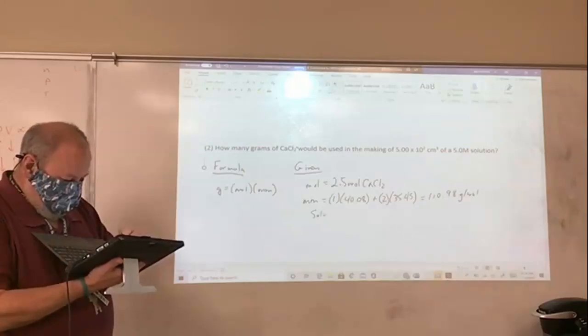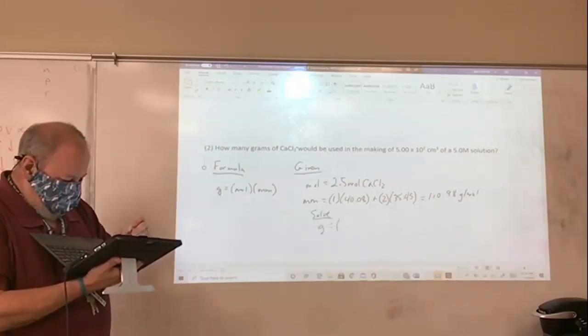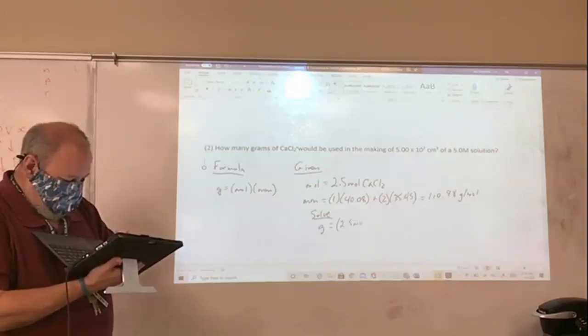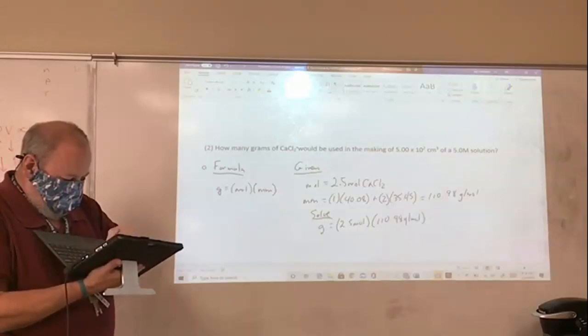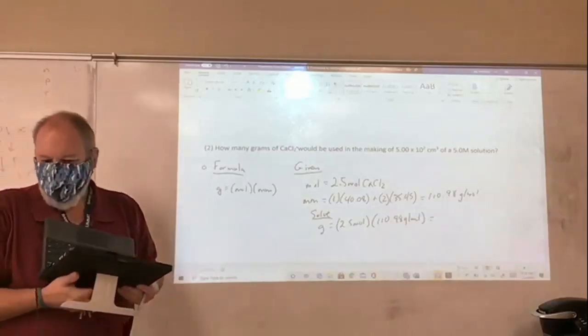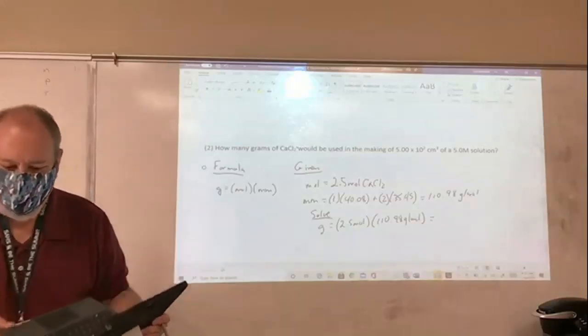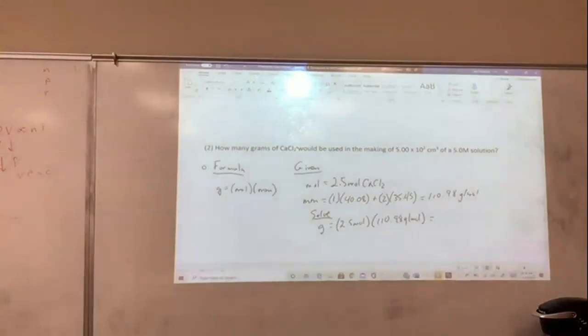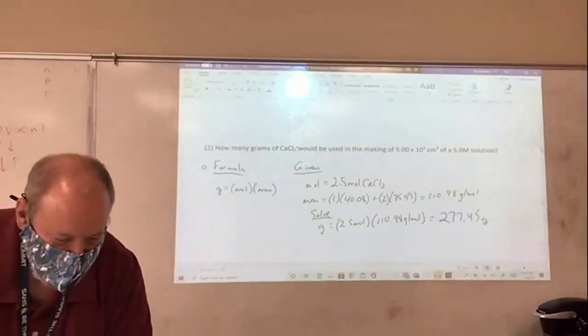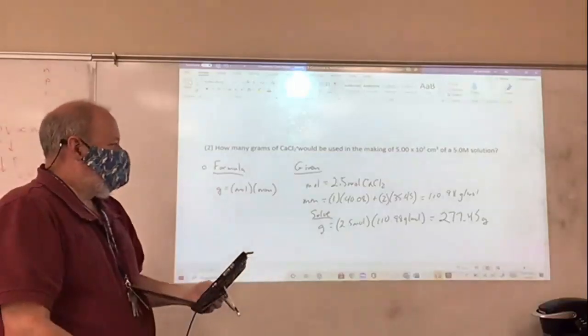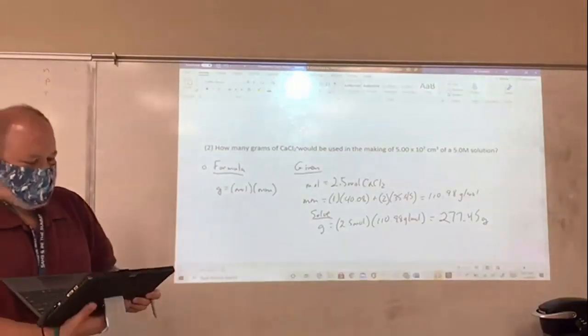So I'm going to solve. Solve: grams equals 2.5 moles times 110.98 grams per mole. And if somebody wanted to calculate that for me, I'd be appreciative. If somebody could get out a calculator and do that. Don't all rush to it. So this is the basics of these types of problems.